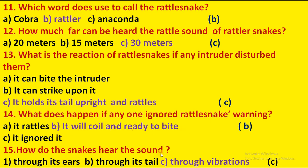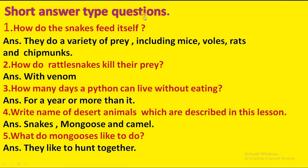How do snakes hear sound? Snakes sound kaise sunti hain? Options: through its ears, through its tail, through vibration. Option C is correct: through vibrations. Short answer questions: How do snakes feed themselves? They eat a variety of prey including mice, voles, rats, and chipmunks. How do rattlesnakes kill their prey? Rattlesnake apne shikaar ko kaise maarte hain? With venom. How many days can a python live without eating? For a year or more.